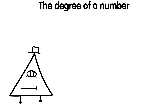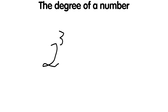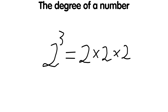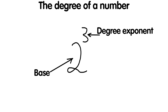The degree of a number is the product of that number multiplied by itself some number of times. For example, two-to-the-third means 2 raised to the power of 3, equal to 2 times 2 times 2, or 8. There are two main parts: the base, which is the number being raised to a degree (in two-to-the-third, the base is 2), and the degree exponent, the number of times the base is multiplied by itself (in two-to-the-third, the exponent is 3).